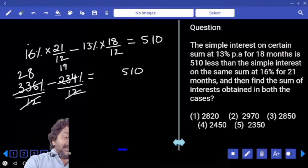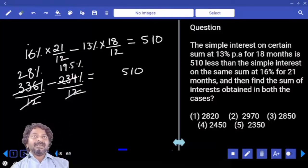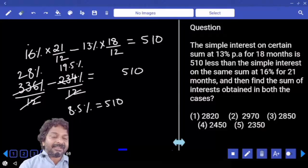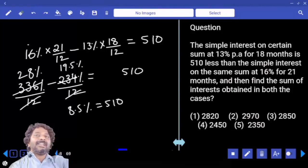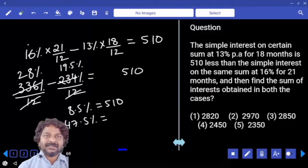What is interest obtained from the first scheme? 28%. From the second scheme, 19.5%. Difference, 8.5%. If eight and half percentage is equal to 510, what's your question? Sum of interest obtained from both the schemes, that is 28 plus 19 and half, which is equal to 47.5%.